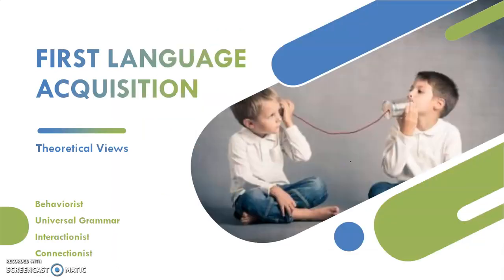We have discussed first language acquisition and the stages of development from the moment the baby is born until they are around five years old. There are many theoretical views about how this process happens, and we selected four theories: the behaviorist, universal grammar, interactionist, and connectionist theory. These four theories are actually related to second language acquisition, which we will be discussing in the following chapters.